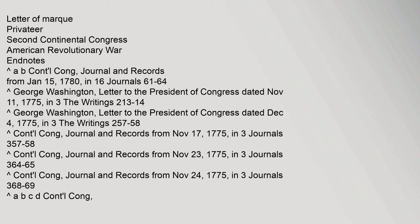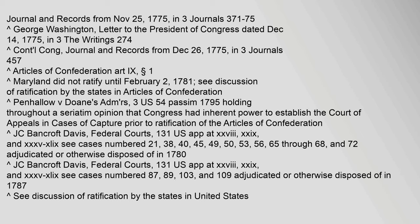Continental Congress journal and records from November 17, 1775, in 3 Journals 364–65. Continental Congress journal and records from November 24, 1775, in 3 Journals 368–69. Continental Congress journal and records from November 25, 1775, in 3 Journals 371–75. George Washington, letter to the President of Congress dated December 14, 1775, in 3 The Writings 274. Continental Congress journal and records from December 26, 1775, in 3 Journals 457. Articles of Confederation, Section 1. Maryland did not ratify until February 2, 1781.